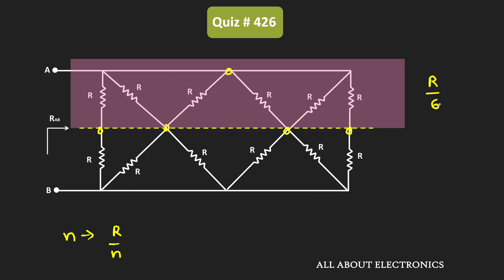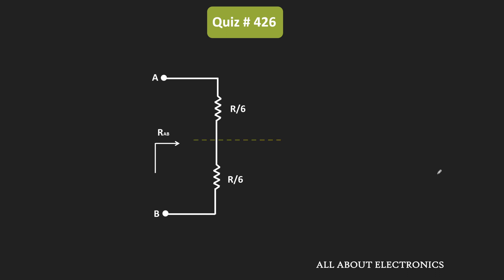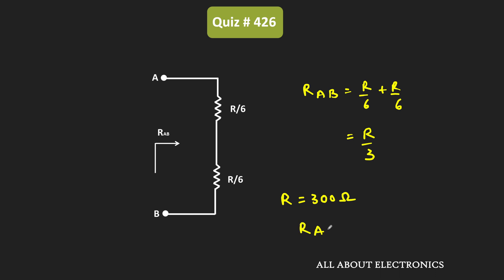Likewise, if you see the bottom portion of the circuit, here also six resistors are connected in parallel, because one arm of all the resistors is connected at this node and the second arm is also connected together. So their equivalent resistance is also equal to R divided by 6. With this simplification, the equivalent circuit has two resistors of R/6, and the resistance between terminals A and B is their series combination. So RAB equals R/6 plus R/6, which equals R/3. Since R is equal to 300 Ohm, the equivalent resistance RAB is equal to 100 Ohm.